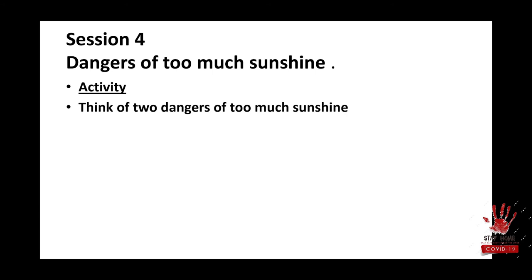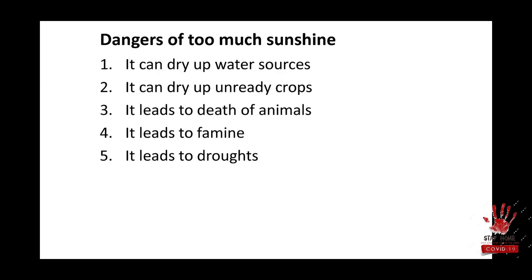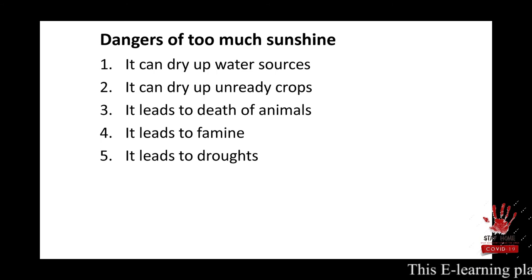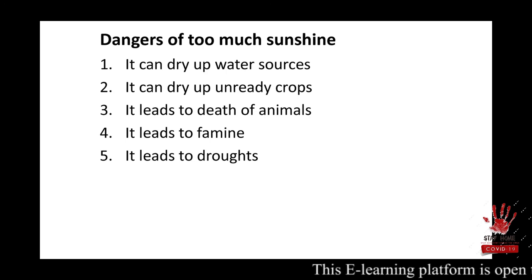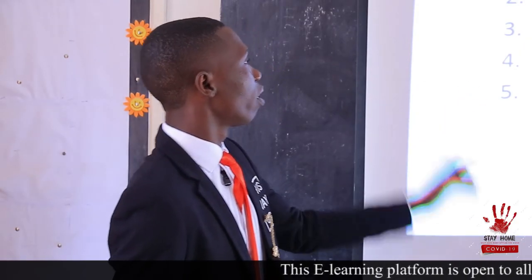Let's see how dangerous too much sunshine can be. One: it can dry up water sources — the likes of wells, springs, rivers. That's why we have seasonal and permanent rivers. Seasonal rivers are mainly affected during too much sunshine — they dry up. Imagine if people were getting water from that river and it dries up, death may occur. So too much sunshine dries up water sources.